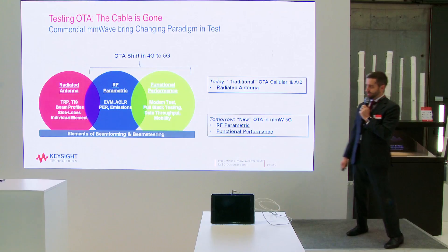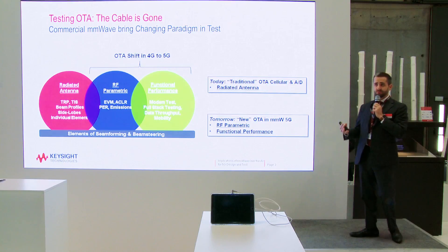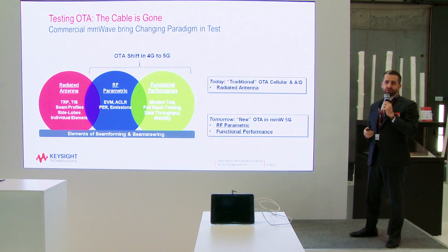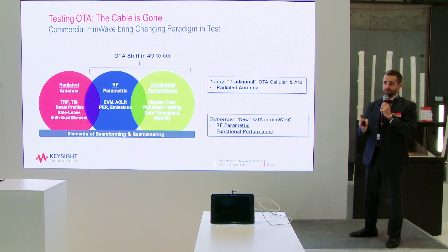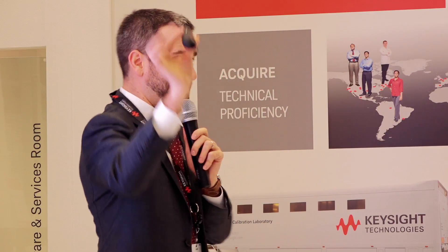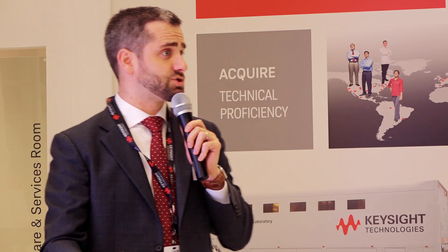Another drastic element is this idea of beam steering and beam forming. You're going to need to take measurements that traditionally were cabled — perhaps measuring power level or testing data throughput — and now do this in a beam forming spatial domain. Not only do you have a direct line of sight measurement, but you'll need to steer your beam and still make sure your device operates. As the beam moves in your handset, you need to maintain your data throughput and connection to the base station.